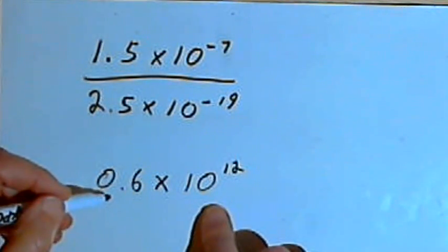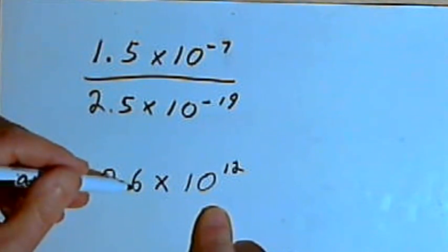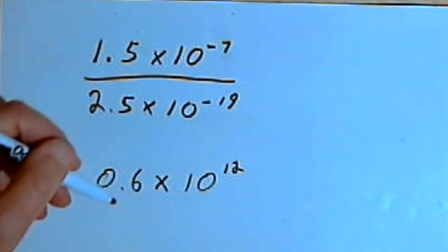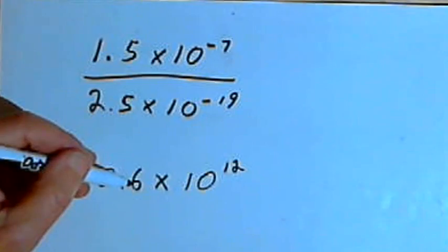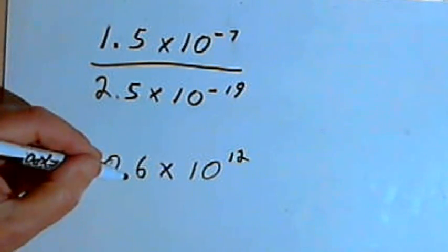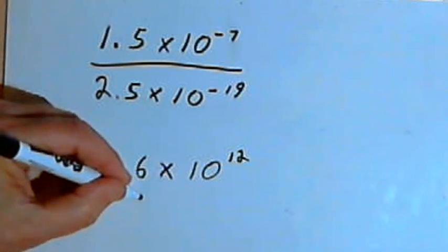So my 0.6 is going to be multiplied by 10 to the 12th. Now, this is not yet in scientific notation, because I'm starting out with 0.6, and I want to start out with a digit, not a decimal point. I want to start out with a digit which is not 0. So I'm going to take that 0.6 and move the decimal point 1 over to the right. That will give me a 6.